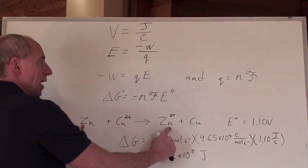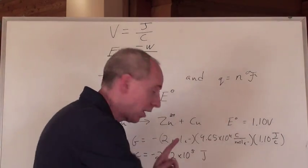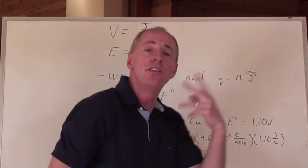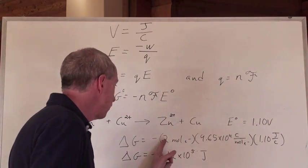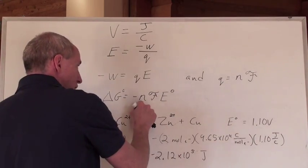Well, the zinc half reaction has 2 electrons that are being lost, the copper has 2 electrons being gained, the exchange is 2, right? And so that's the number that goes in for N. That's the 2.